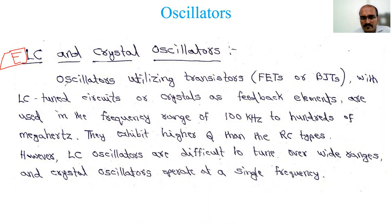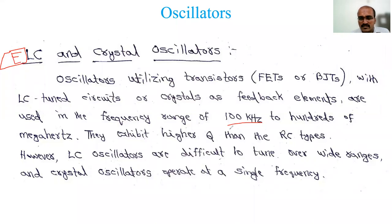Oscillators utilizing transistors — FETs or BJTs — with LC-tuned circuits or crystals as feedback elements are used in the frequency range of 100 kHz to hundreds of MHz. These are used in high-frequency applications such as communications, antenna towers, and receivers. LC and crystal oscillators serve as the feedback element along with an amplifier, which may be a FET or BJT.